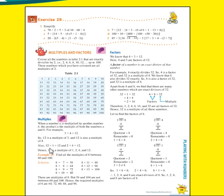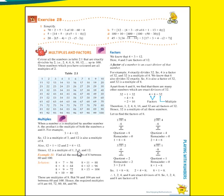Also, 12 ones are 12, and 2 sixes are 12 — we get 12 by multiplying other number pairs as well. Hence, 12 is a multiple of 1, 2, 6, and 12 itself. We get 12 after multiplying all these numbers, so 12 is the multiple of 1, 2, 6, and 12.